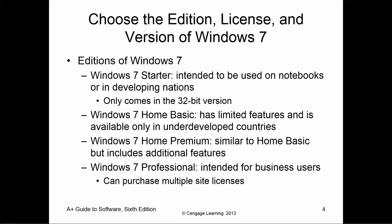We focus predominantly on Windows 7, so we're going to cover some basic versions. The first one is Windows 7 Starter, which is a bare minimum Windows 7 environment. It's basically only for notebooks or developing nations, and only comes in the 32-bit version. It has no real other Windows 7 features whatsoever, but it's also the cheapest one out there.